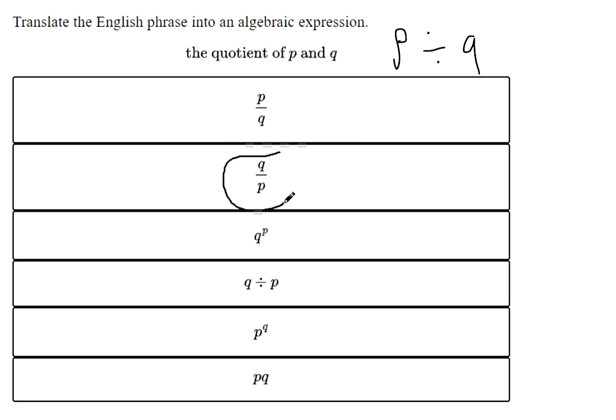This one would be the quotient of Q and P. The order matters when you say things with division, so Q and P is not correct. This is Q to the power of P, so that's not right.